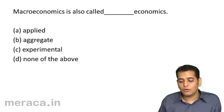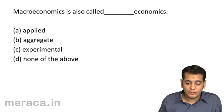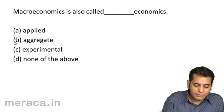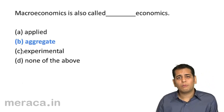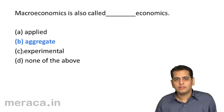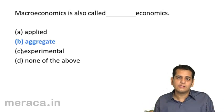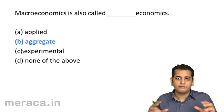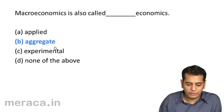Next question: macroeconomics is called dash economics. Options: A, applied; B, aggregate; C, experimental; D, none of the above. Macroeconomics is called aggregative economics. Now why is it called aggregative economics? Because we add the incomes and the product of all the single units. We go on adding and bring an aggregate, developing an aggregate from them. So it is called the economics of aggregates.